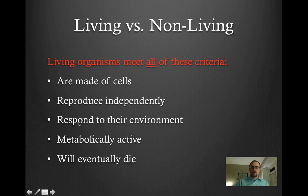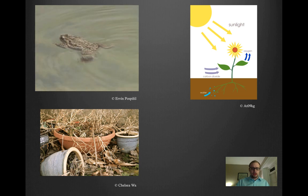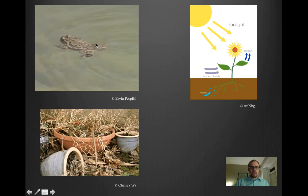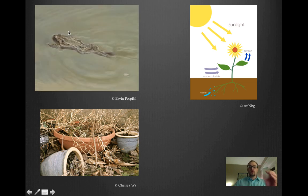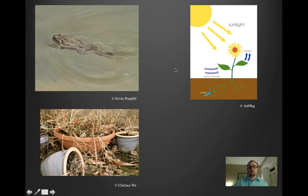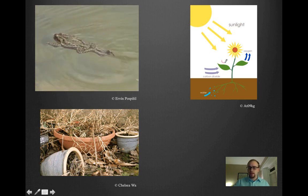The next criteria is that organisms need to respond to their environment. Take this frog as an example — it is responding to its environment, able to move around, and if something disturbed the water it would respond to that change. When you think of responding to the environment you might think of animals, but plants, fungi, and bacteria can also respond. For example, if an insect were to attack this plant leaf, the plant would actually be able to respond and defend itself by releasing defensive chemicals to ward off insect attacks.